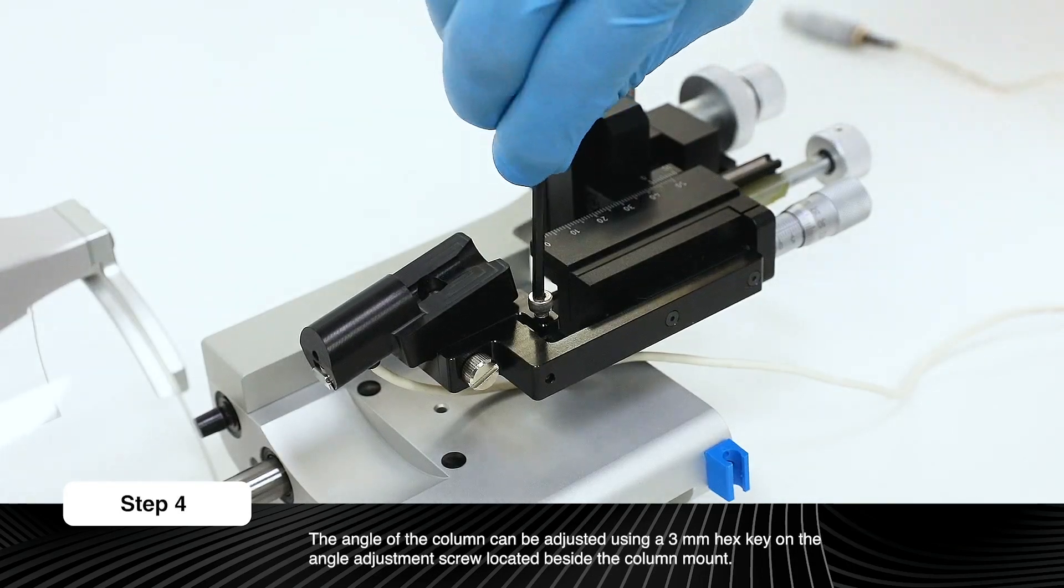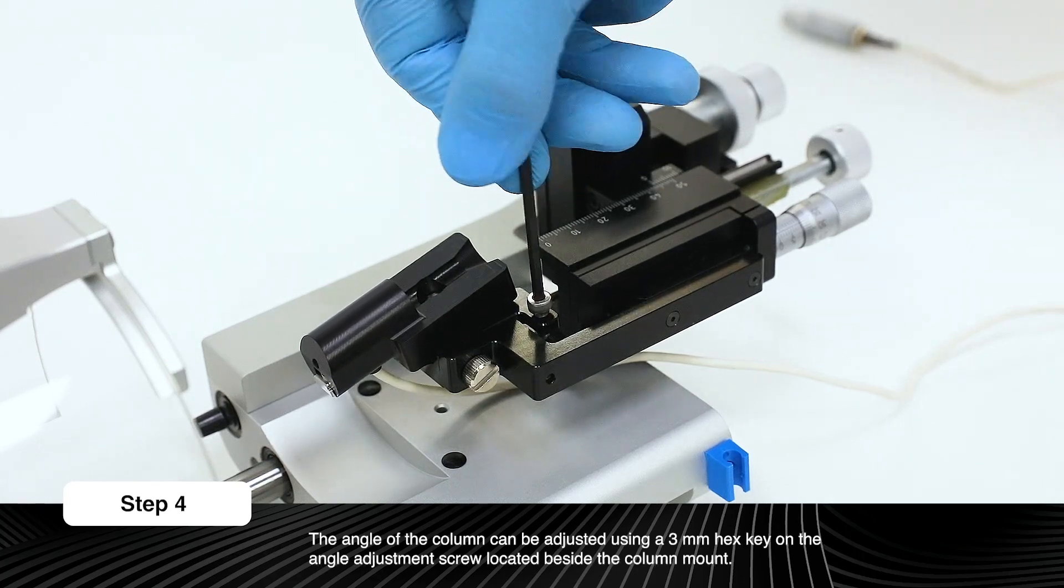The angle of the column can be adjusted using the angle adjustment screw located beside the column mount.